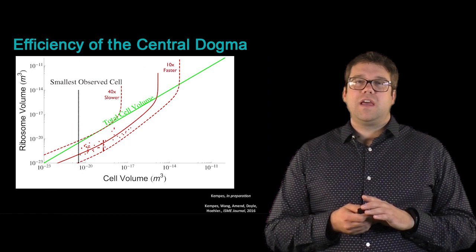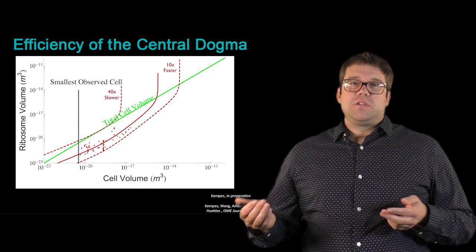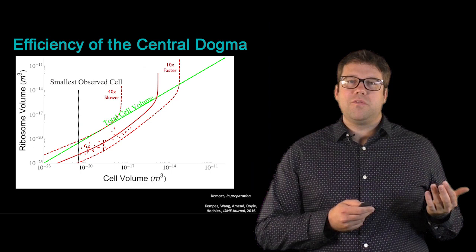This might tell us something about early life. How would it tell something about early life? Well, one experiment that we can perform is to say, imagine the ribosome was worse than the one that we have, or imagine that it was much better.